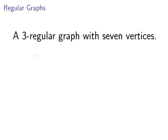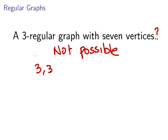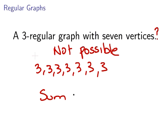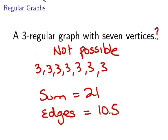So can we draw a 3-regular graph with seven vertices? The answer is no — not possible. The reason is that the degree sequence would be 3, 3, 3, 3, 3, 3, 3. The sum of the degree sequence is 21, which would mean 10.5 edges — and you can't have a graph with 10.5 edges. So not possible. And that ends our presentation on regular graphs.